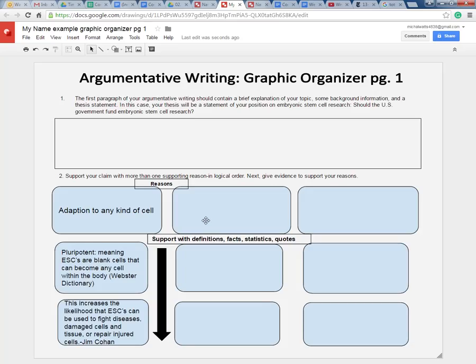The first thing it says is that it's your introductory paragraph. You want to explain your topic, give some background information, and provide a thesis statement. Your thesis statement is going to be the position on the topic. The topic that you have is embryonic stem cell research. Should the U.S. government fund embryonic stem cell research?